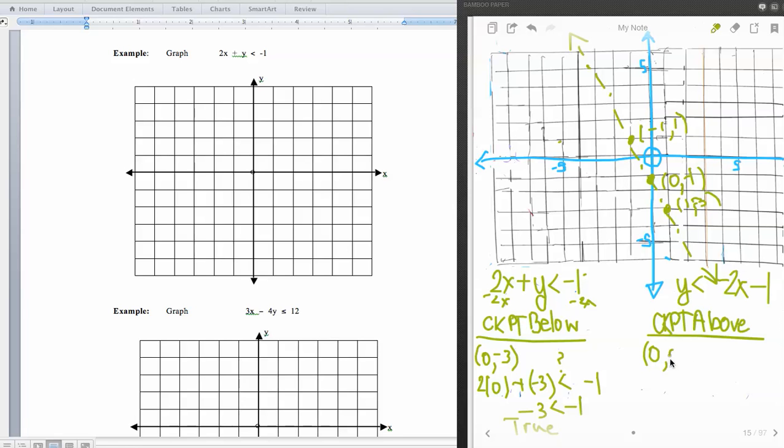The checkpoint I'm going to choose above the boundary line is the origin, because it's there, and remember that's always a good one to check. So 2 times 0 plus 0, and I want to know, is that less than negative 1? And of course, this says 0 is less than negative 1. And of course, that's a false statement, and therefore I'm going to go back to this one that's true, and I'm going to shade it as a result.